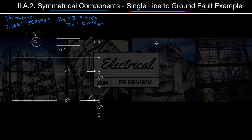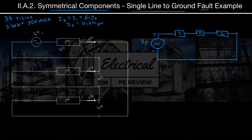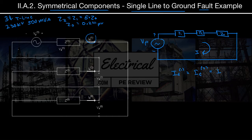Since this is all in series, we can redraw it as: our phase voltage source VP, then Z1, then Z2, then Z0 — the zero-sequence impedance — all in series. Following the current IA1 around the loop, it connects with IA0 and IA2 and comes back around. So this is all one series circuit with no parallel components, meaning IA1 equals IA2 equals IA0 — they are all the same current.